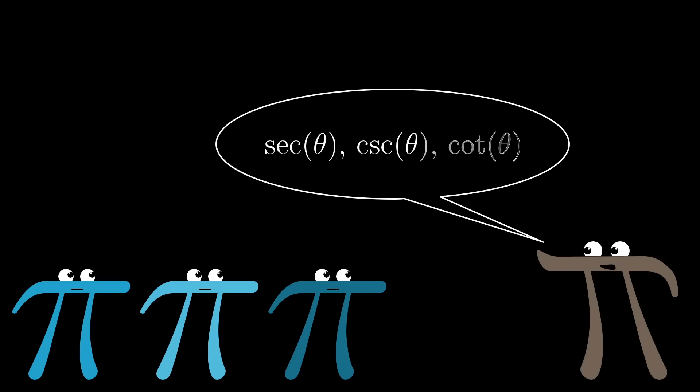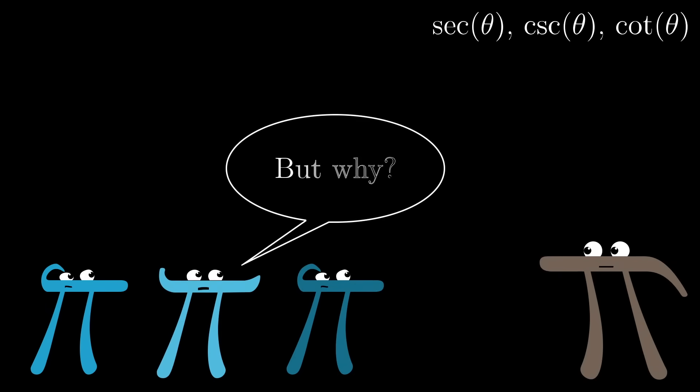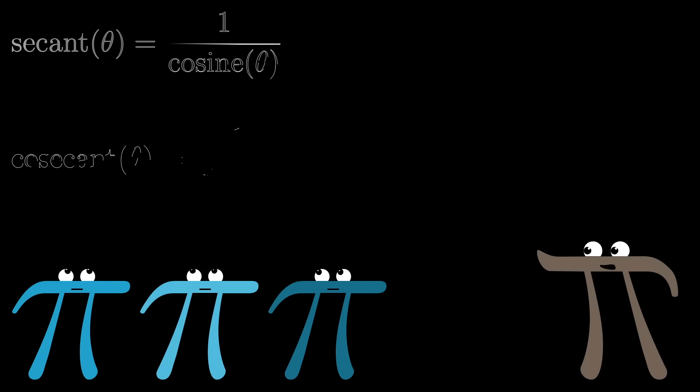But cosecant, secant, and cotangent never really come up in problem solving in a way that's not just as convenient to write in terms of sine, cosine, and tangent. At that point, it's really just adding more words for students to learn with not that much added utility.